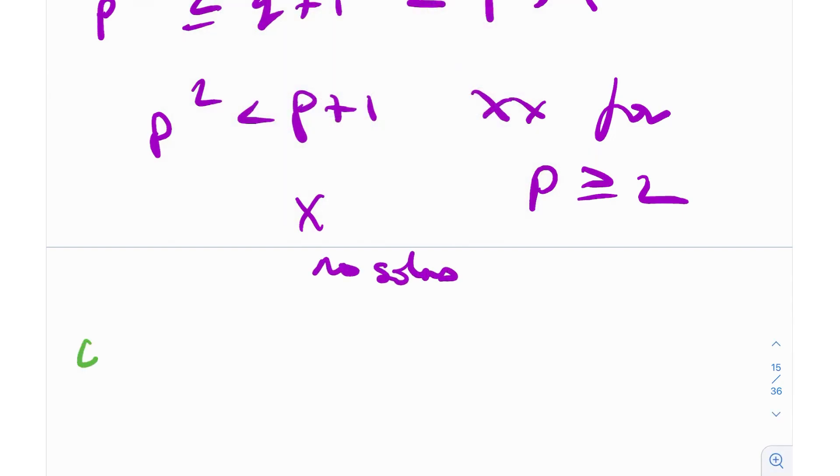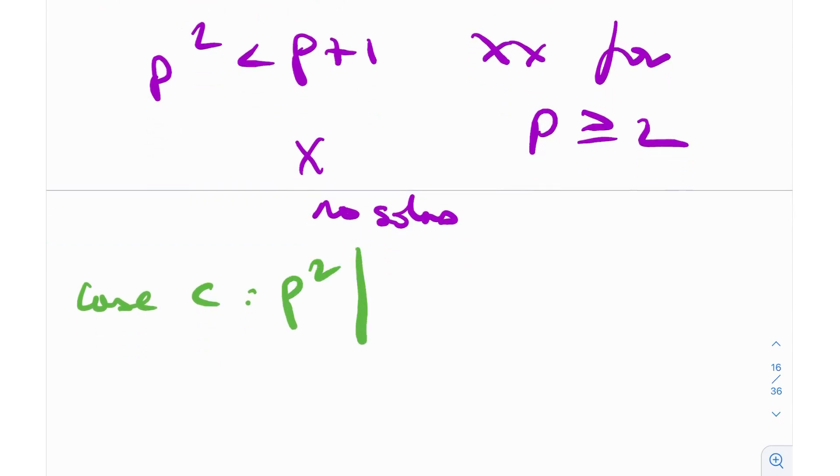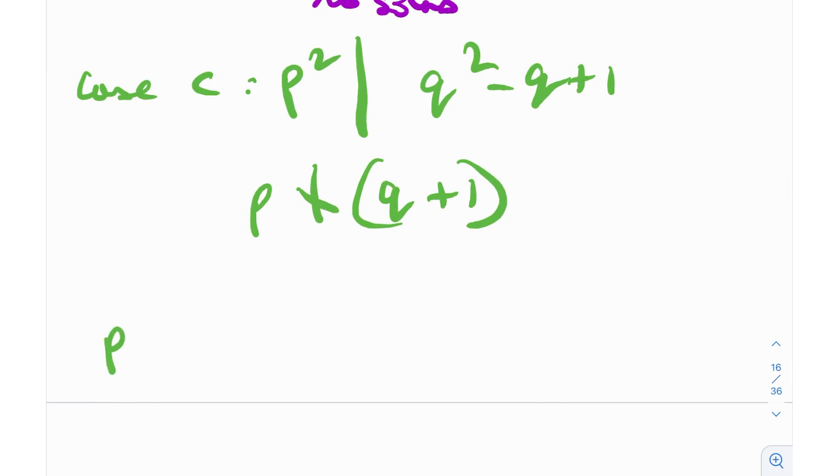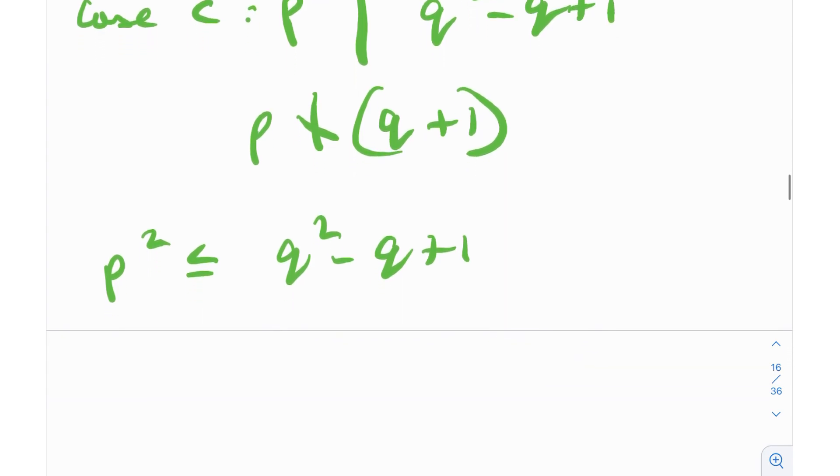Case C: p^2 divides q^2 - q + 1 and p does not divide q + 1. We have something similar here. p^2 needs to be less than or equal to q^2 - q + 1, but this is definitely less than q^2, which is less than p^2. So you get p^2 less than p^2. This is obviously incorrect. So again, no solutions here.